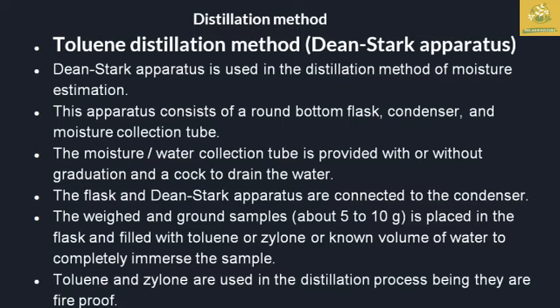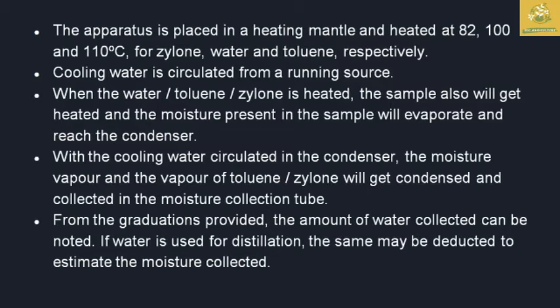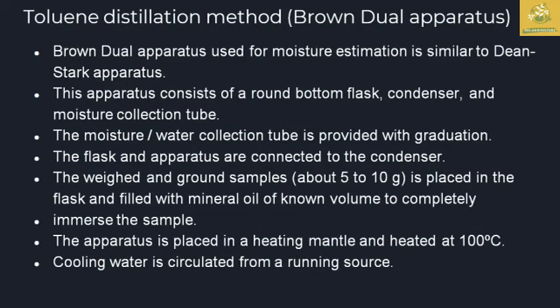Toluene and xylene are used in the distillation process because they are fire-resistant materials. The apparatus is placed on a heating mantle at 82°C for toluene and 100°C to 110°C for xylene. Cooling water is circulated through the condenser. When the toluene or xylene is heated, the sample is also heated, and moisture in the sample evaporates, reaches the condenser, condenses, and is collected in the moisture collection tube. The amount of collected water is read from the graduations.